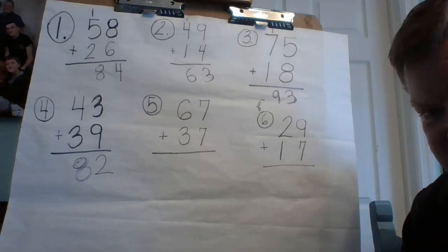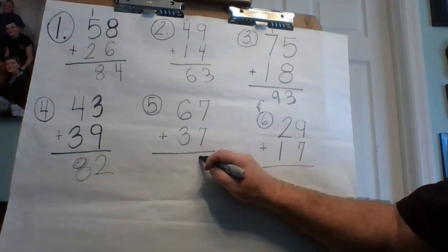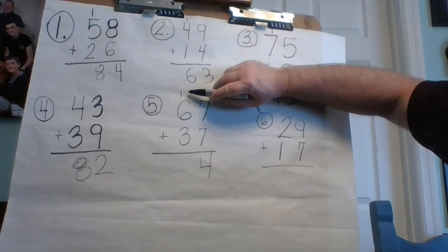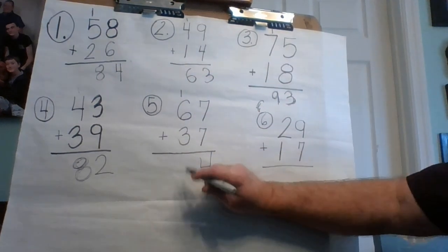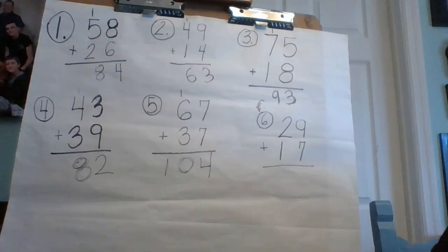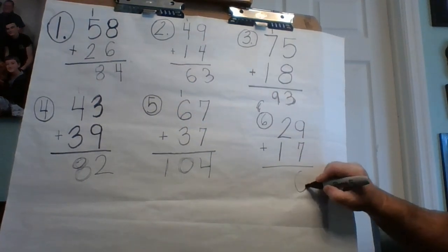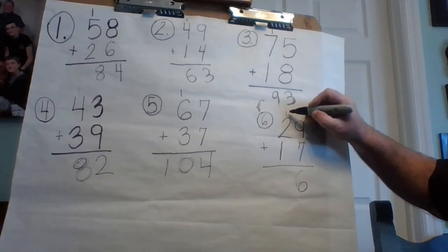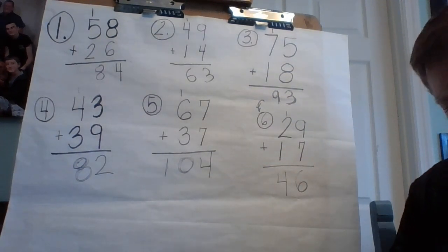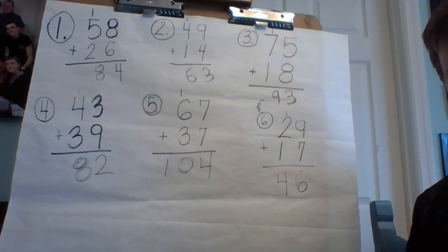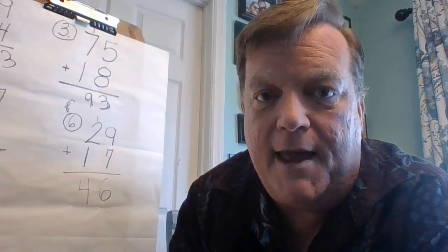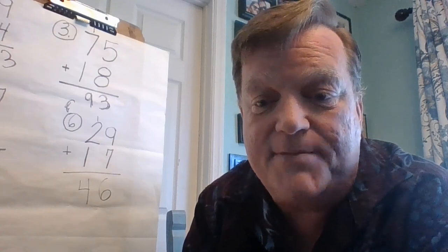Number five: seven plus seven is 14 — we all know our doubles. Four goes here, one goes here. Six plus one is seven, and seven plus three is ten — put zero here and the one goes here. And the last one: nine plus seven is 16 — six goes here, one goes there. Two plus one is three, plus one more is four — and that's 46. I hope you enjoyed our first lesson. I'm going to put more lessons up every day and we're going to go through things we've learned this year. I miss you guys, bye!